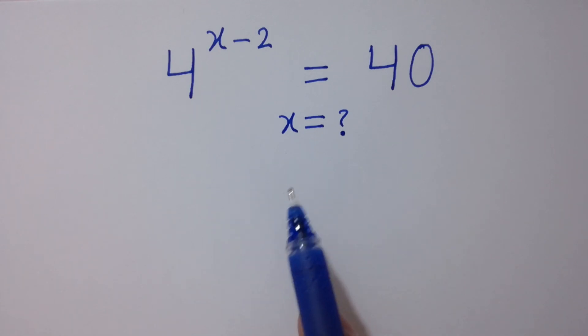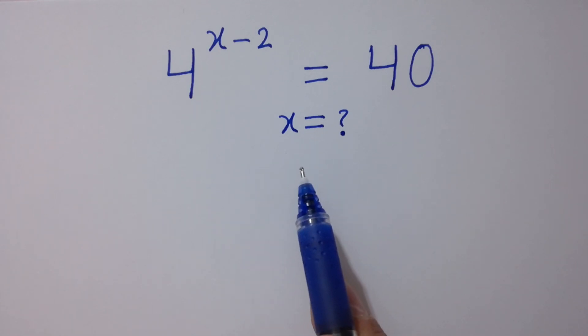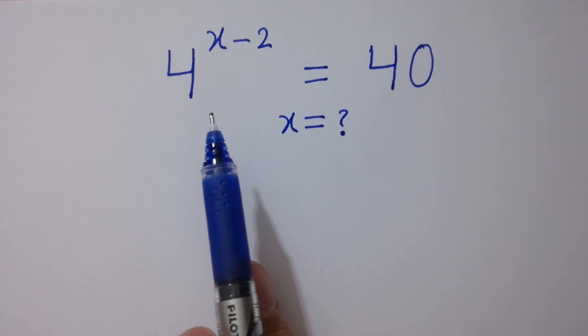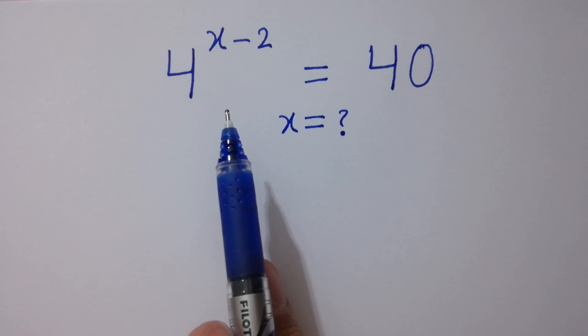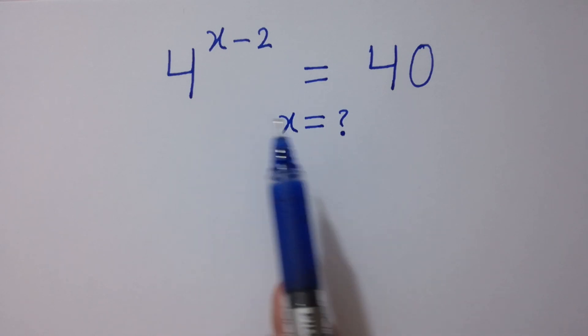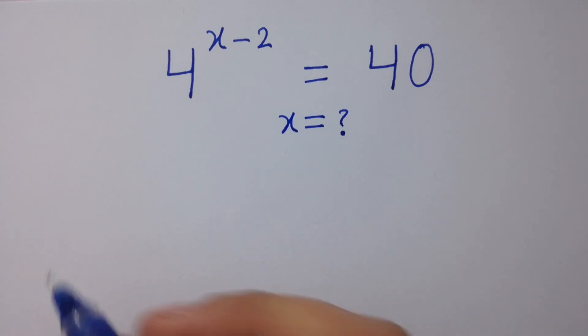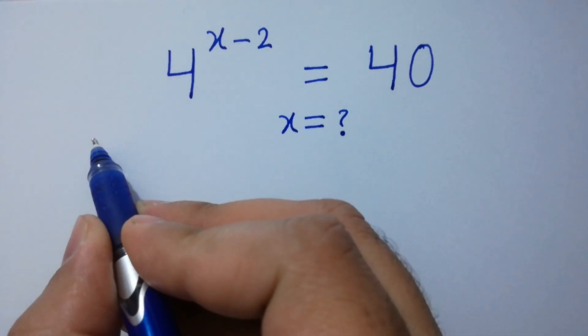Hello friends. Find the value of x if 4 to the power x minus 2 equals 40. Let's have a solution here.